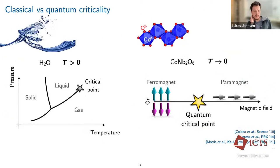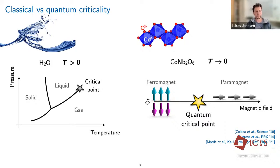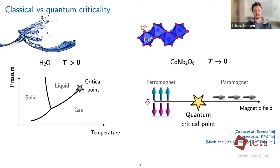When we think of quantum criticality, we often think of it as just a zero-temperature version of a classical critical point. A very well-studied example where this quantum-to-classical mapping works well is the transverse Ising model, realized for example in cobalt niobate in an external magnetic field, which features a transition between an ordered ferromagnet and a field-induced paramagnet described by a 1+1 dimensional Ising universality class. The point of this talk is that a quantum critical point is in many instances much more than just a zero-temperature version of its classical counterpart.